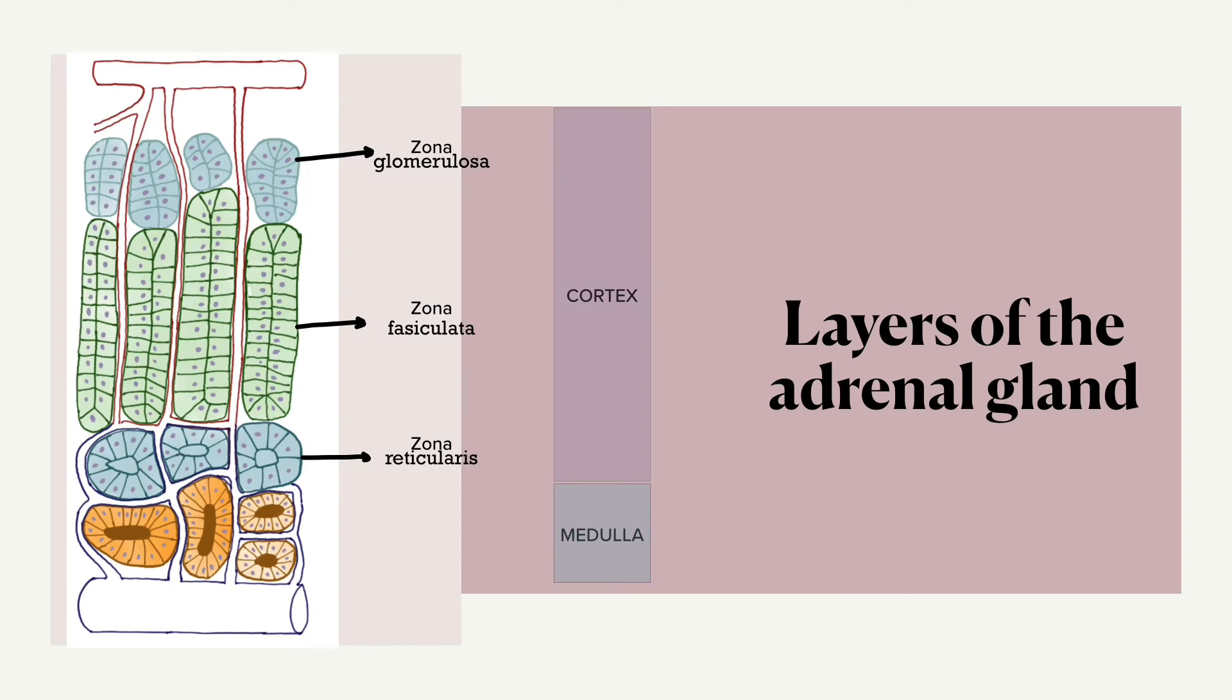Now we're going to talk about the layers of the adrenal gland. An adrenal gland is made up of two main parts, the adrenal cortex, which is the outer region and also the largest part of the adrenal gland. It is divided into three separate zones: zona glomerulosa, zona fasciculata, and zona reticularis. Each zone is responsible for producing specific hormones.